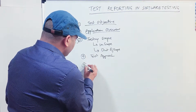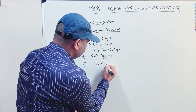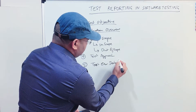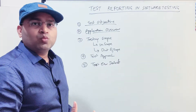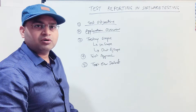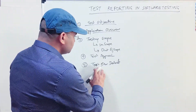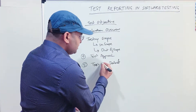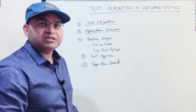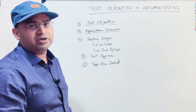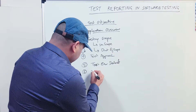The next important section is the test environment details — where did you test, what were the platforms, what combinations of platforms were used, and if there are any software or browser combinations involved. All those details need to go into the test environment section so stakeholders can understand how testing was done and what platforms were covered.